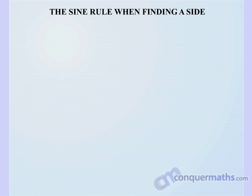In this lesson we look at using the sine rule when finding a side. We are going to be working with non-right angled triangles. This is a little bit different from what we're used to in trigonometry. So far we have always dealt with right angled triangles, but now non-right angled triangles.